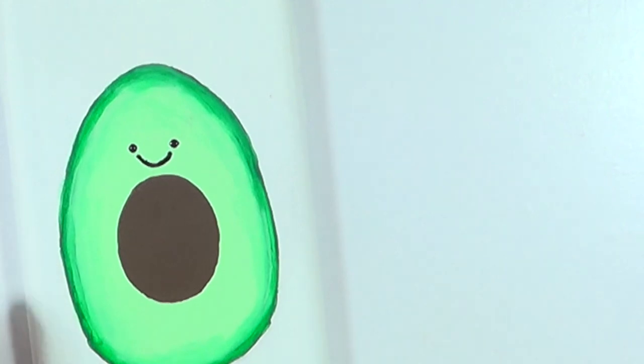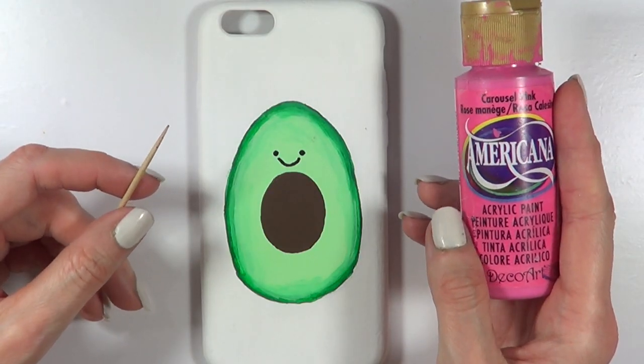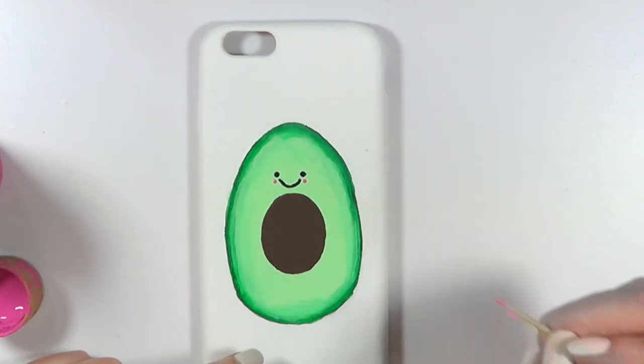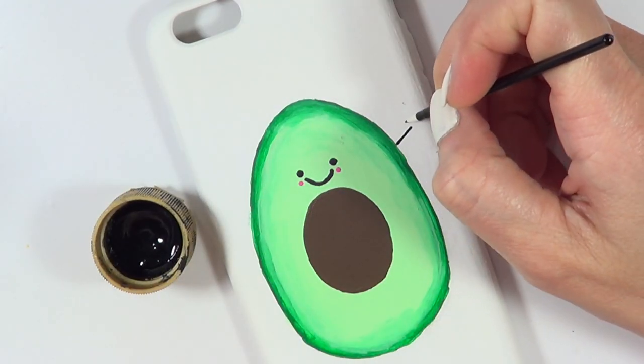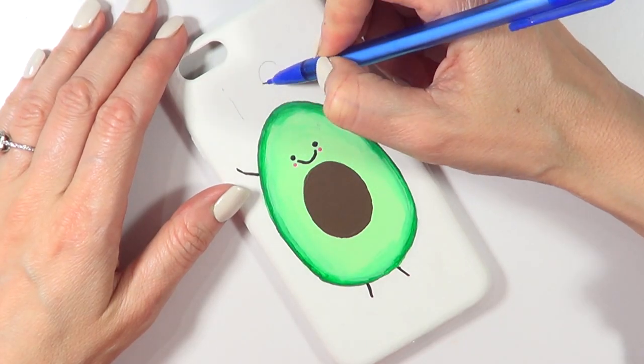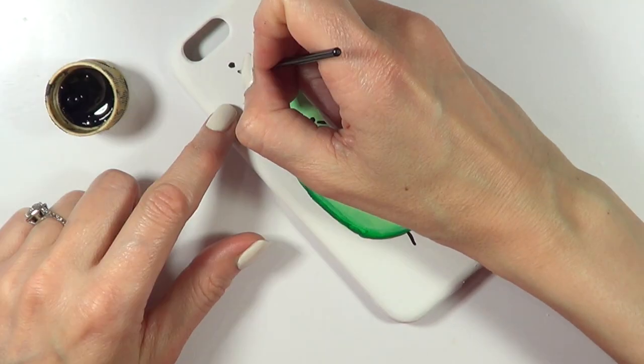Then I'm going to be using my pink and a toothpick and I'm just going to add two cheeks. Then I went with my thin brush and I added some like arms and legs just because I thought this would look cute.